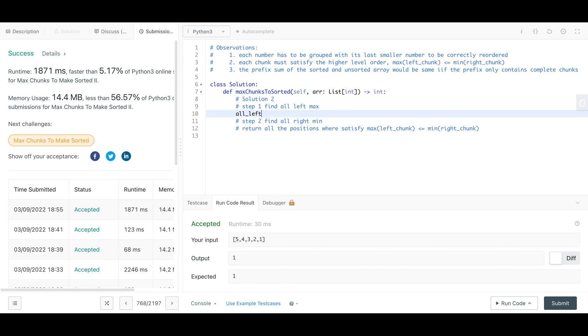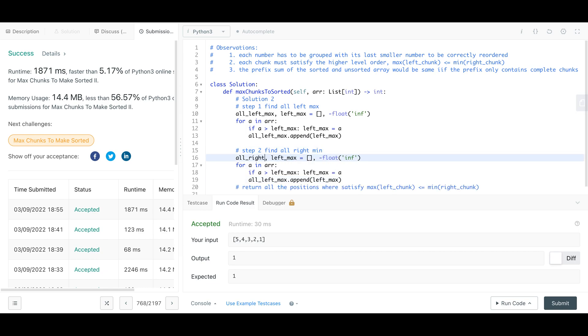We want a container for all the left max values and also track the left max. Then we just go through this array to update the left max value. The second step is totally symmetric, so I'll just copy the code here and change to right min.